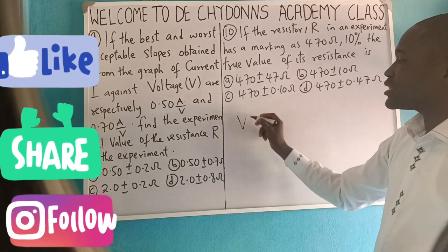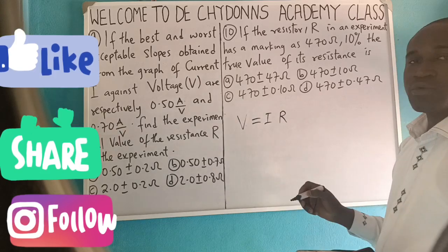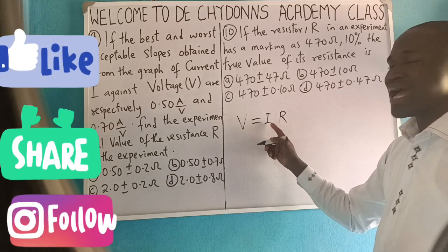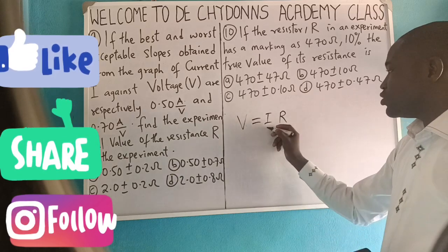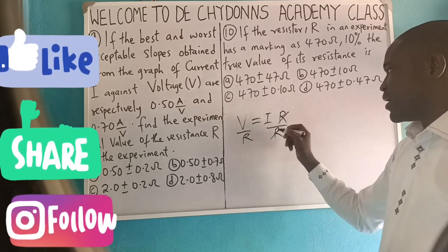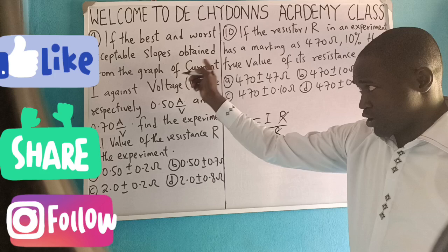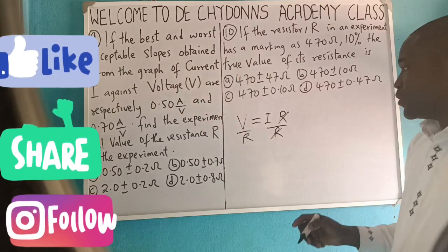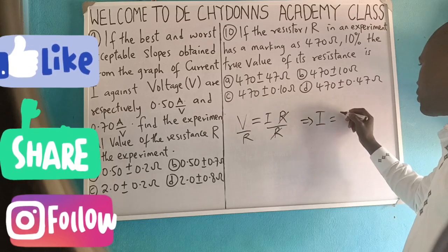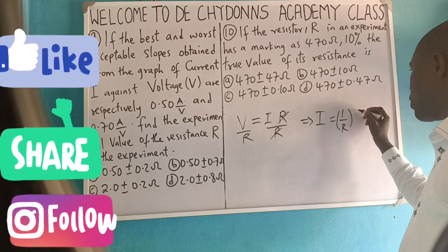Now, we remember Ohm's law that V equals IR. That means if you have to plot a graph of I against V, it means make I the subject of formula. You divide by R. I am now making I subject of formula because we plotted a graph of current against voltage here.